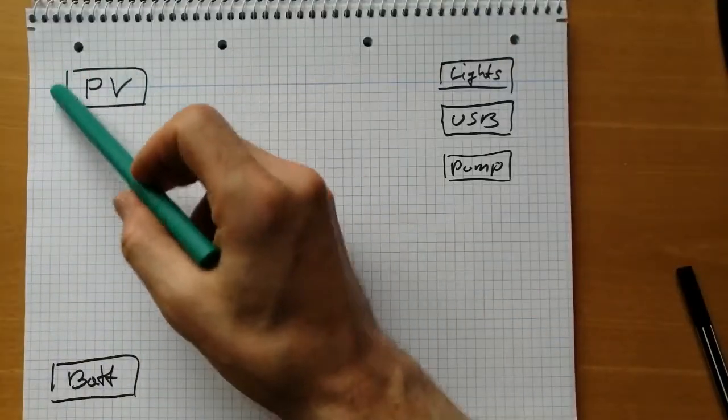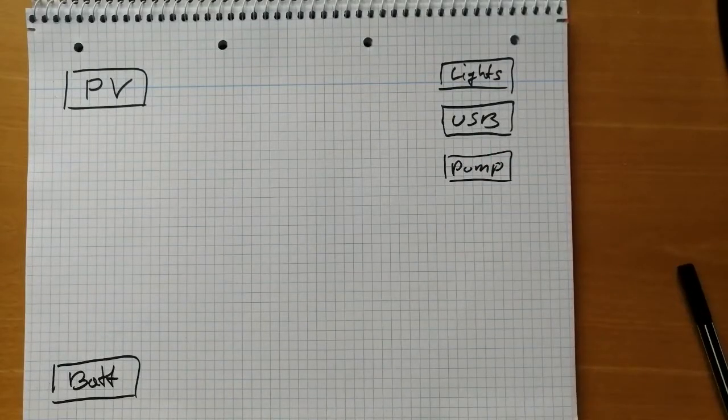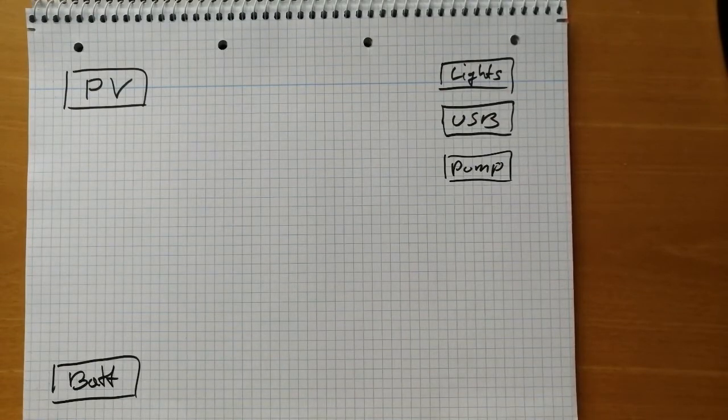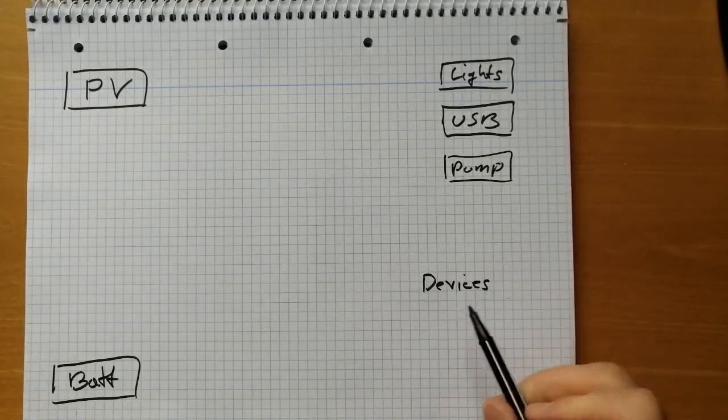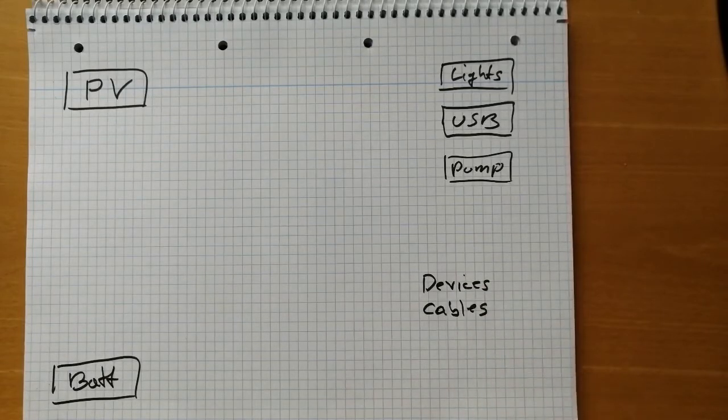We have our panel here, we have the battery and we have our load on this side. So in general when we talk about safety we talk usually also about fuses. Fuses is the main tool to protect our devices. So that's what we want to protect, our devices and our cables, to protect them from overheating and self-ignition.